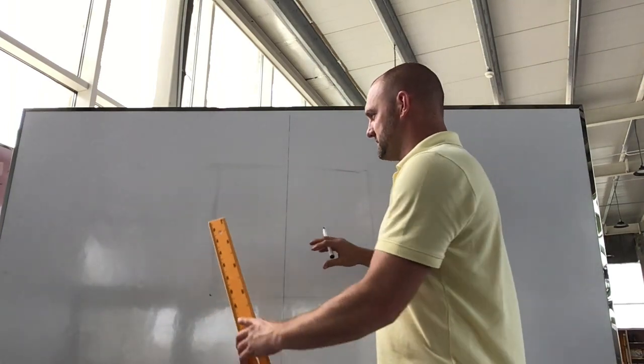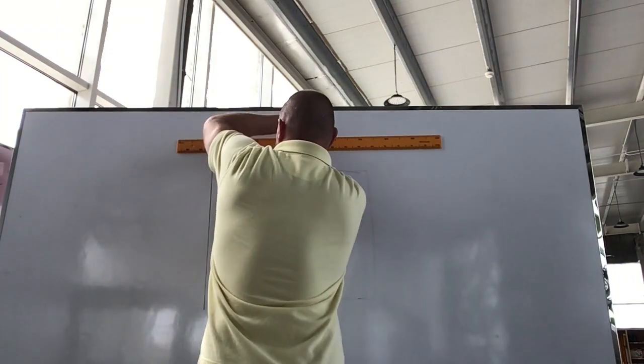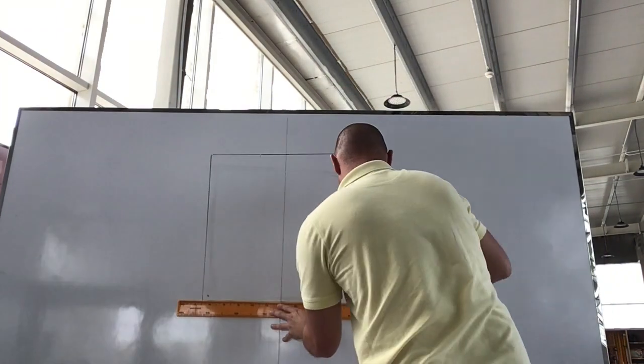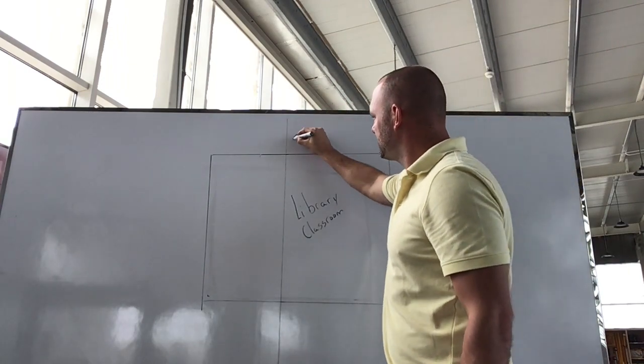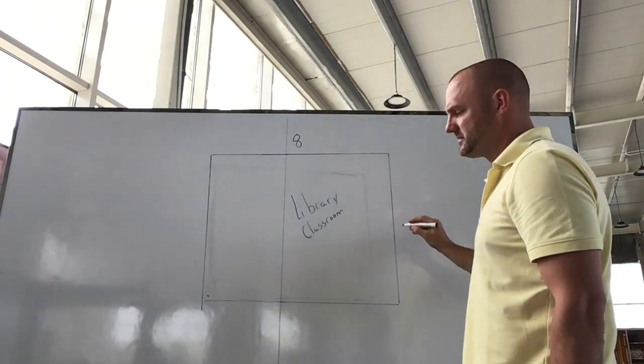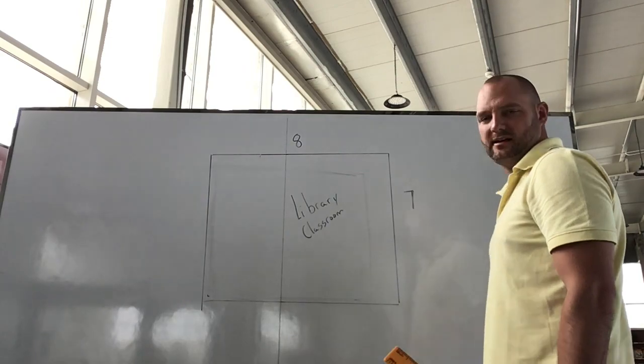So I'm going to draw this out. We're going to find the perimeter of this and the area. So I want you to do this for a room inside of your house, so you can walk it out and see how many steps it is and figure out the area.